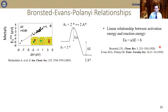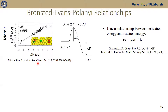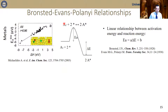The BEP relationships date back to the 1930s and were developed for homogeneous chemistries. In catalysis, they have been introduced by Professor Michaelides from the Thomas Young Centre of London and applied in computational catalysis. Other groups such as Nørskov have also done a lot of work. These wonderful relationships tell us that you can relate the activation energy of a reaction with the reaction energy on your catalyst surface — basically relating kinetics with thermodynamics.